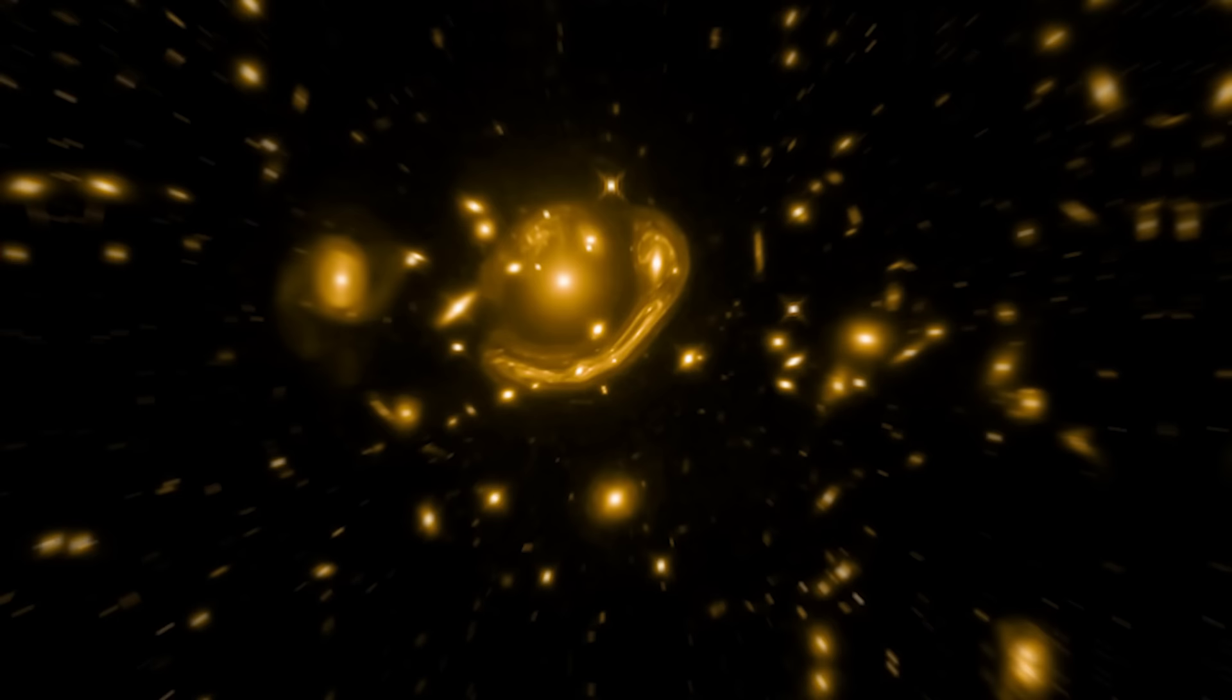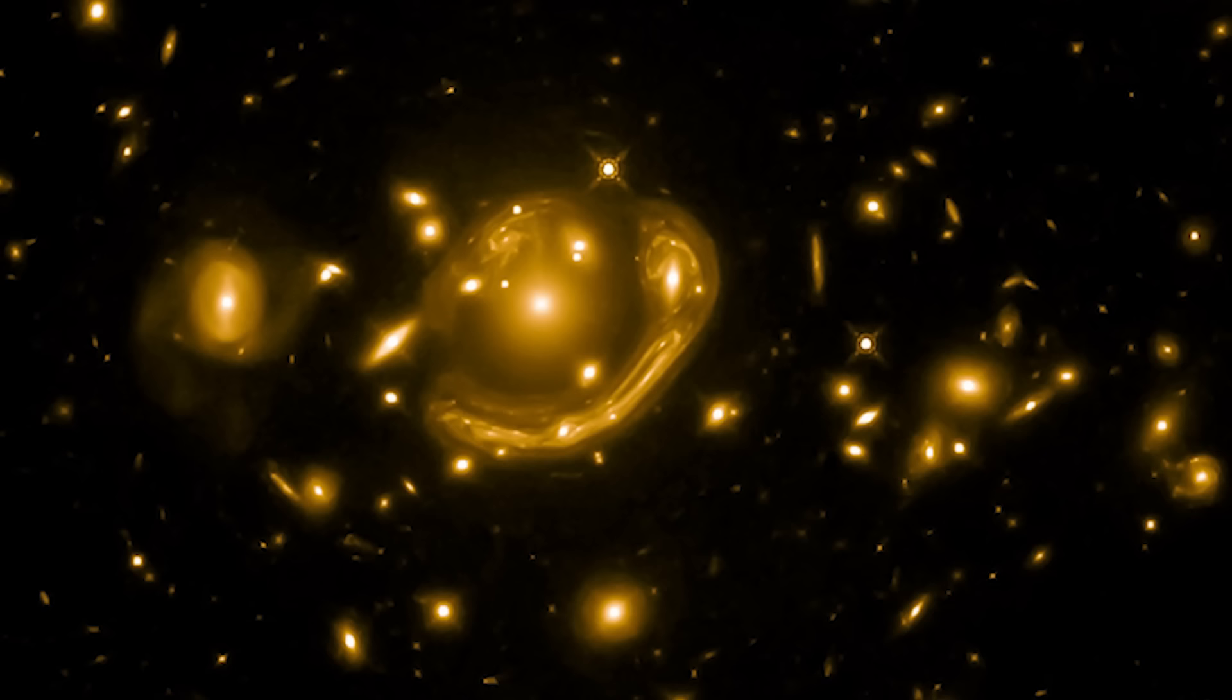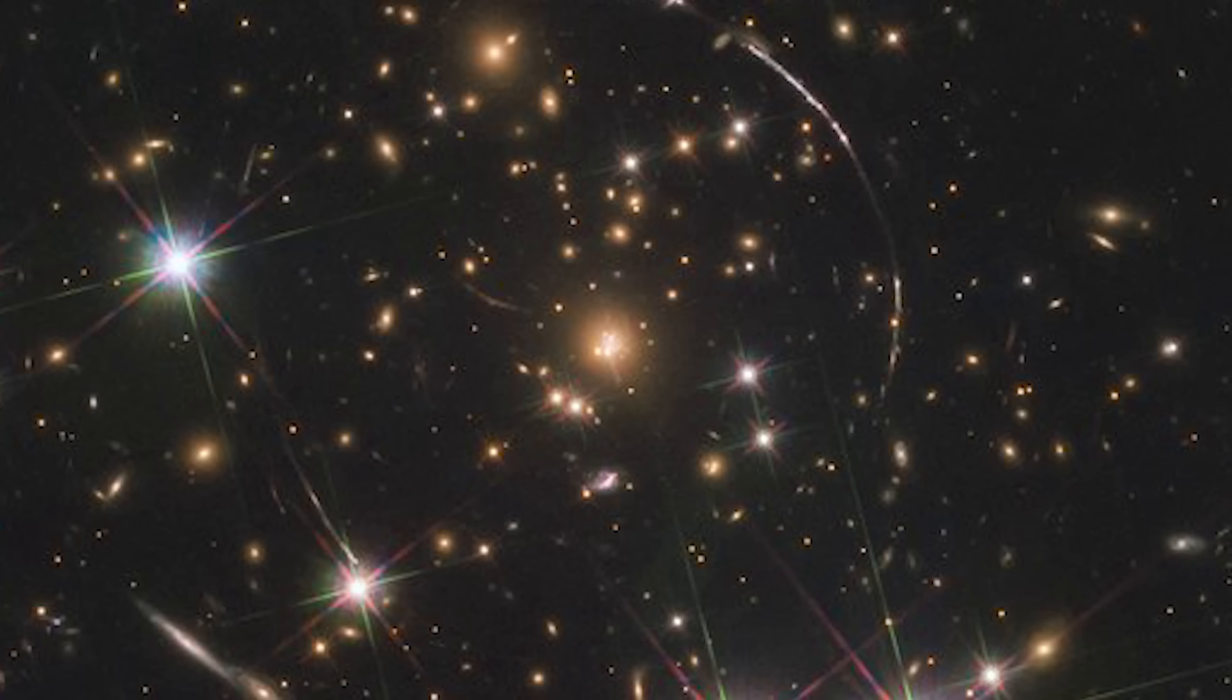GAL-CLUS-022058S is the largest and one of the most complete Einstein rings ever discovered in our universe. The object has been nicknamed by the principal investigator and his team as the molten ring,